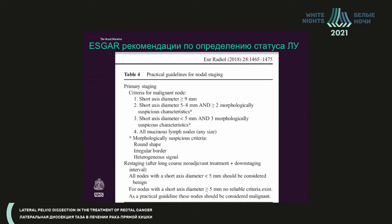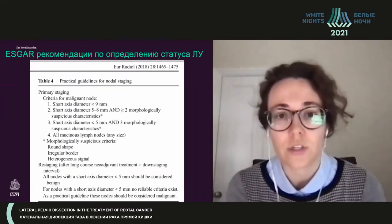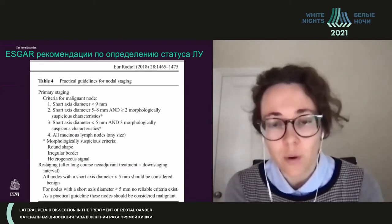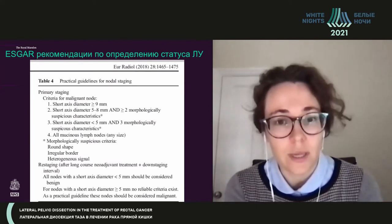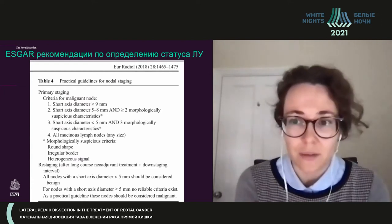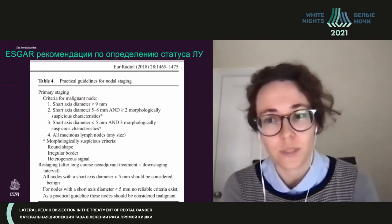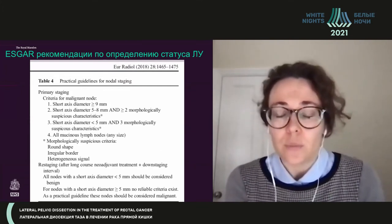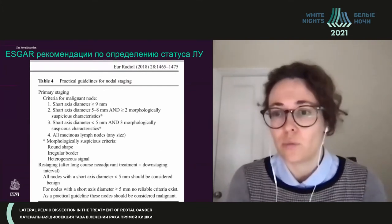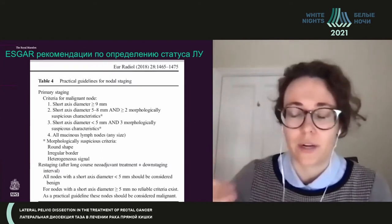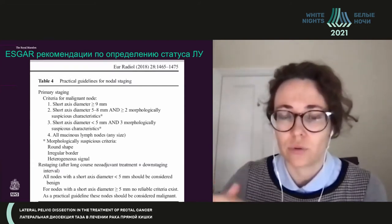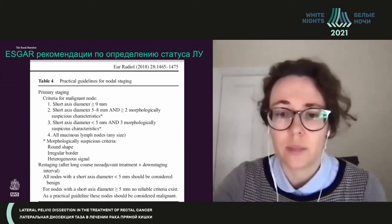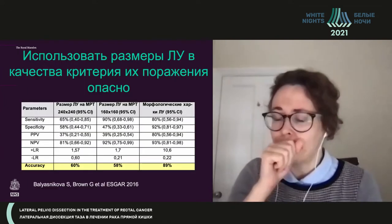Believe me, if you measure one lymph node, the same person can measure it differently. Within five minutes it can be five millimeters, seven millimeters, or at a completely different angle, nine millimeters. This is an utterly subjective criterion, and saying that the threshold of lymph node involvement should be judged by size alone is not correct.